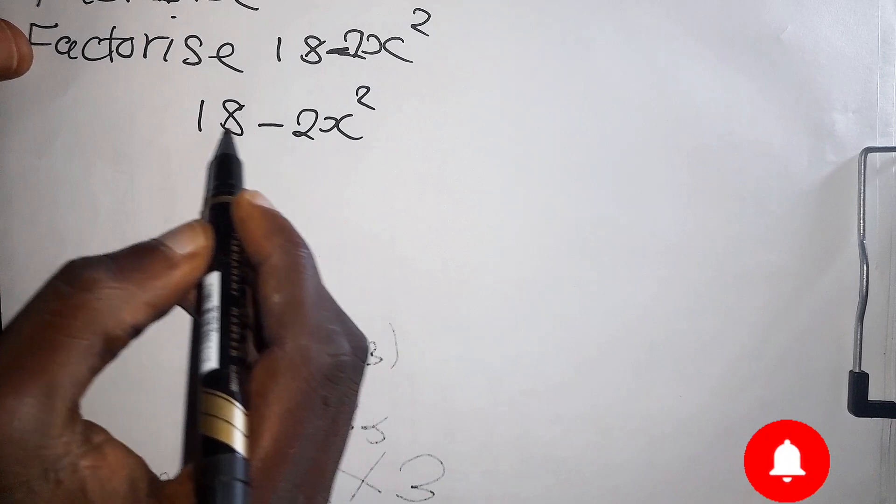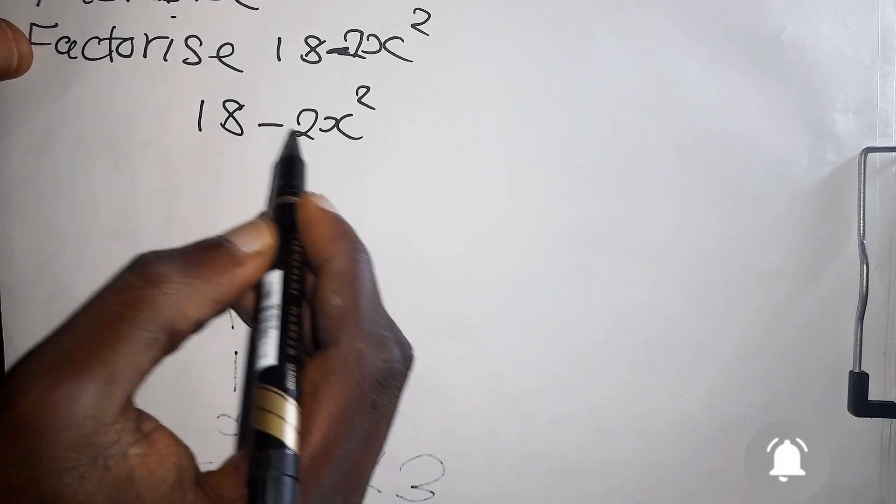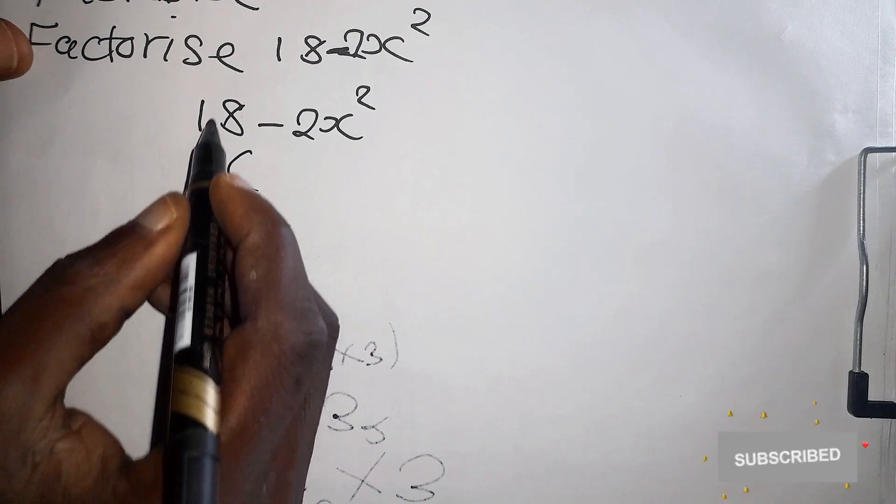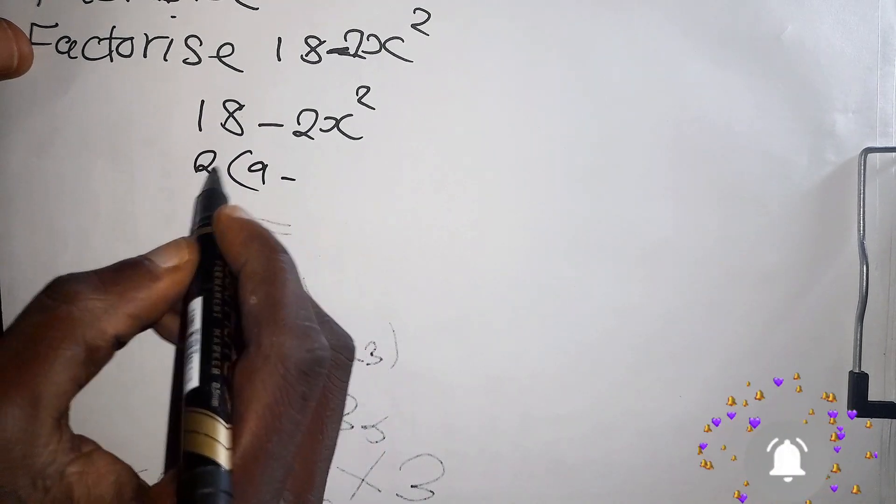So in terms of common factors, what is common here? 2 is common. So 2 outside, 2 into 18 is 9 minus 2 into 2.